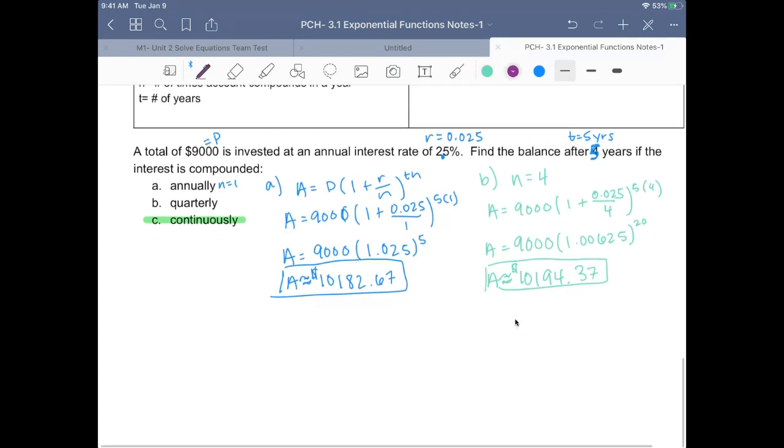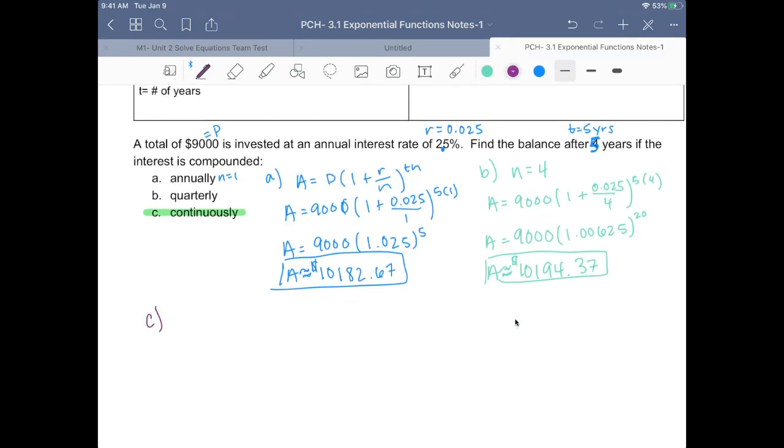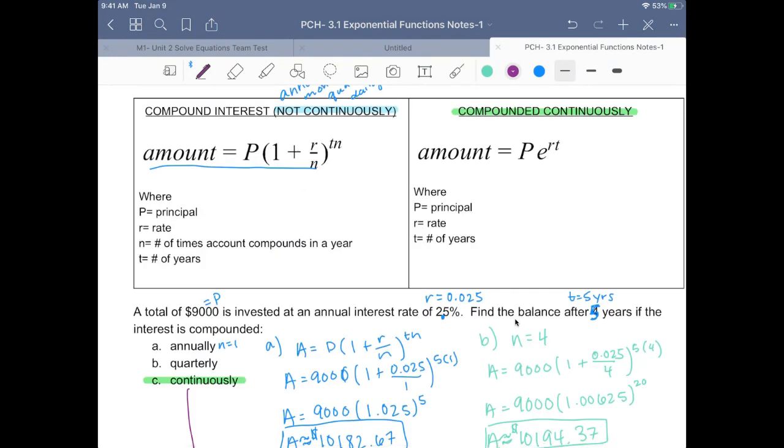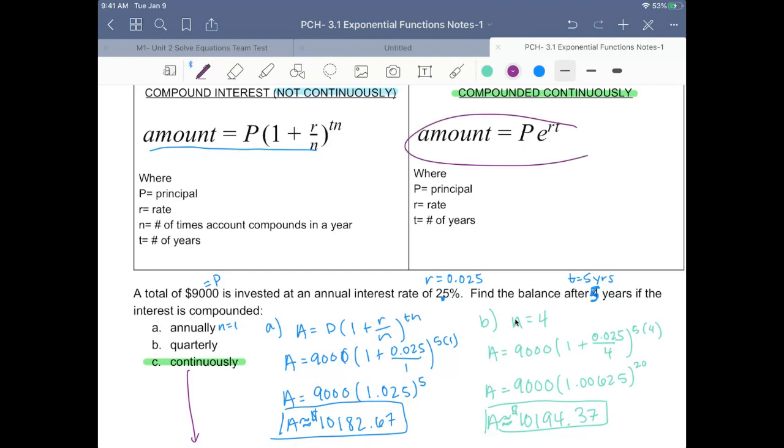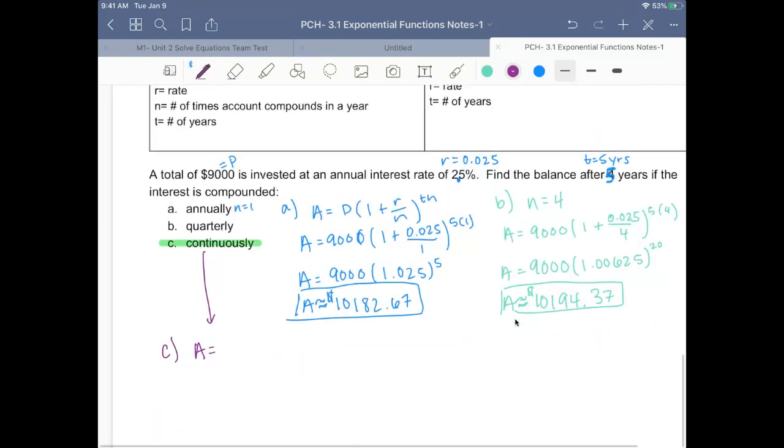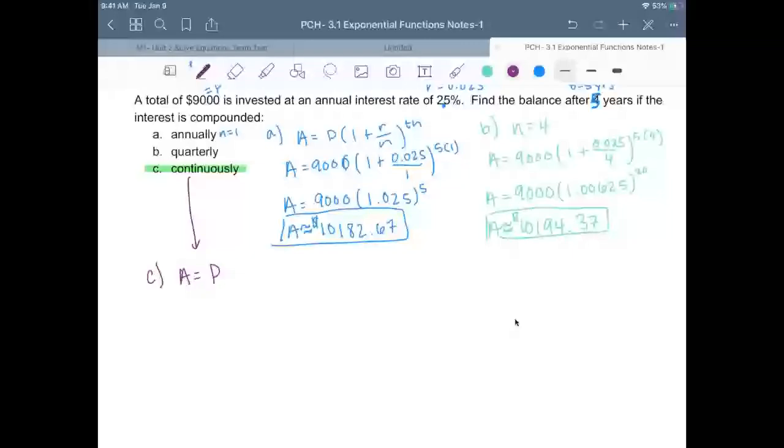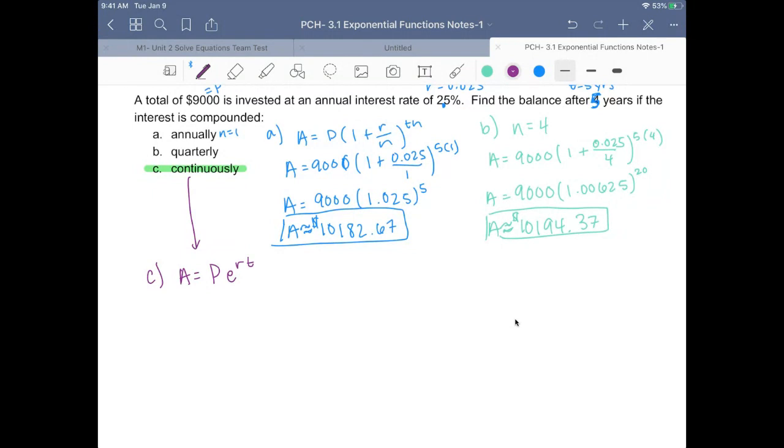Lastly, continuous. So we use the amount is equal to, remember we use this formula over here, continuous, PERT, the principle times the natural base, raised to the rate times time.